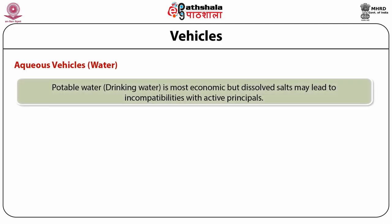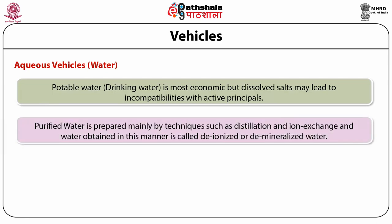Potable water is the most economic option. However, the dissolved salts in potable water may sometimes be undesirable and lead to incompatibilities with active principles. In these instances, purified water is preferred. Purified water is prepared mainly by techniques such as distillation and ion exchange. In the ion exchange method, water is passed through a column of cation and anion exchangers, and water obtained in this manner is called deionized or demineralized water.